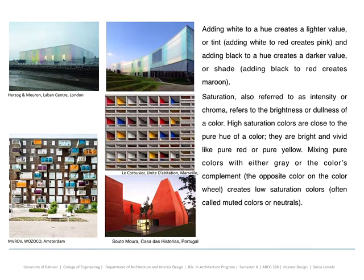We have some examples of how architects use color, mainly in the facades of buildings. The variation of hue, saturation, and chroma is related to how the architect wants us to feel when we look at the project. It has to have a direct connection to the conceptual approach that is behind the whole project.